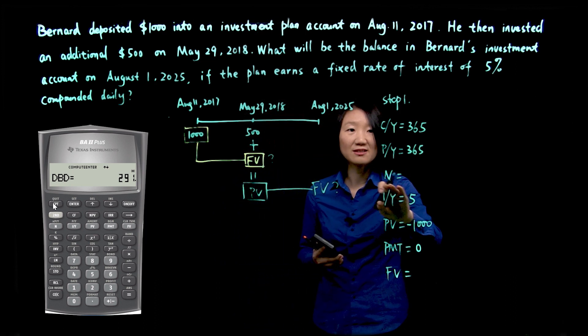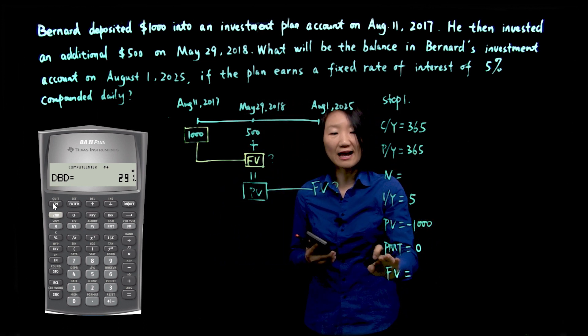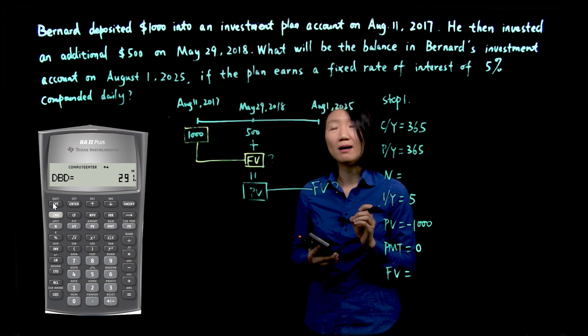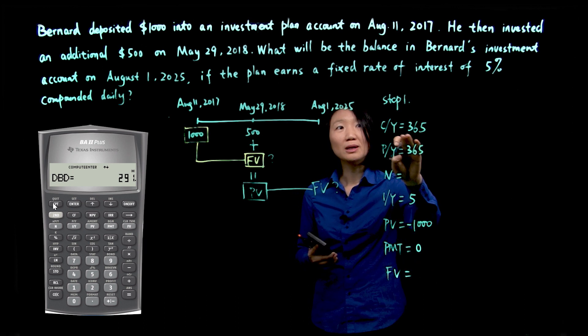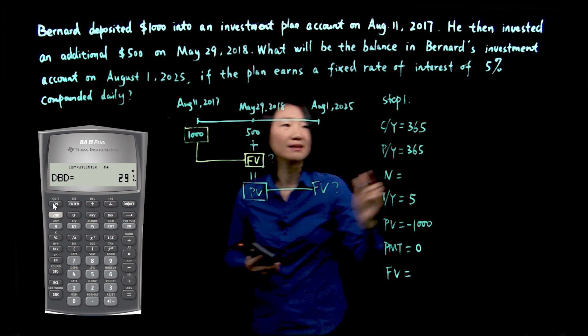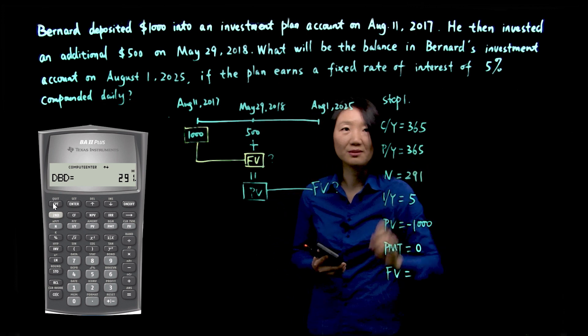Now remember definition for N. When we do not have periodic payment, N represents number of compounding periods. We compound daily, and there are 291 days. So 291 compounding periods.